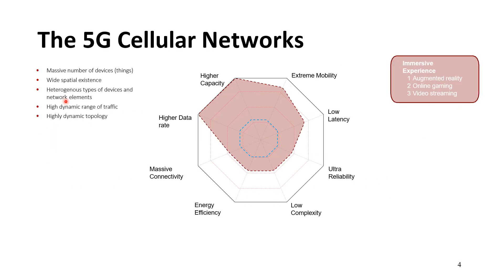For 5G cellular networks, the system is characterized by a massive number of devices and things, wide spatial coverage, heterogeneous types of devices and network elements, a high dynamic range of traffic, and a highly changing topology. Topology refers to how things are connected together.